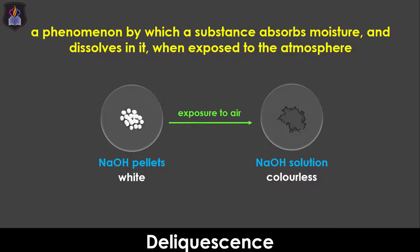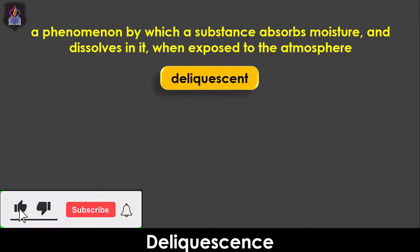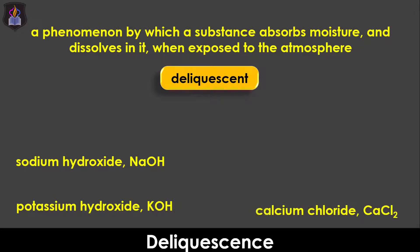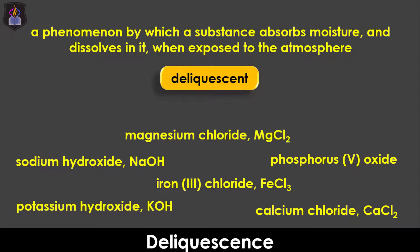Any substance that exhibits deliquescence is said to be deliquescent, and examples of deliquescent substances are sodium hydroxide, potassium hydroxide, calcium chloride, iron-3-chloride, phosphorus-5-oxide, magnesium chloride, silica gel, etc.